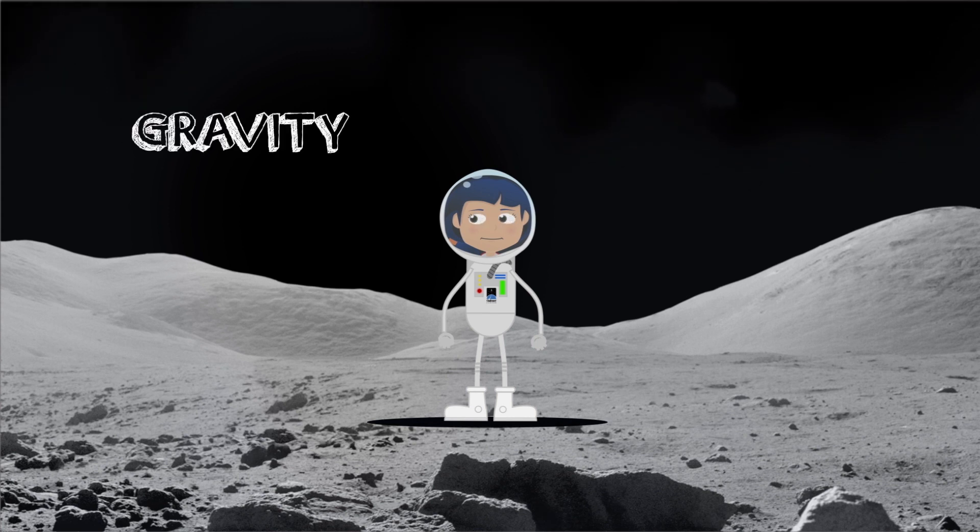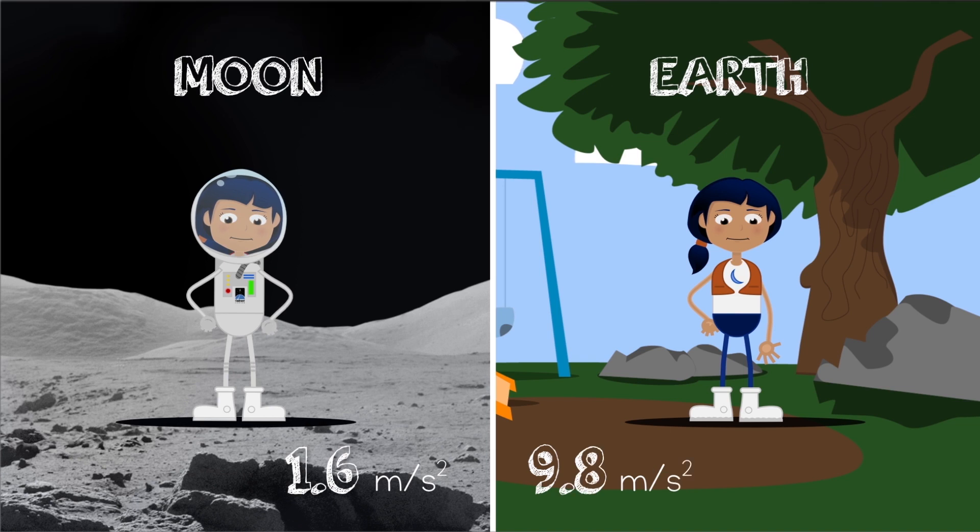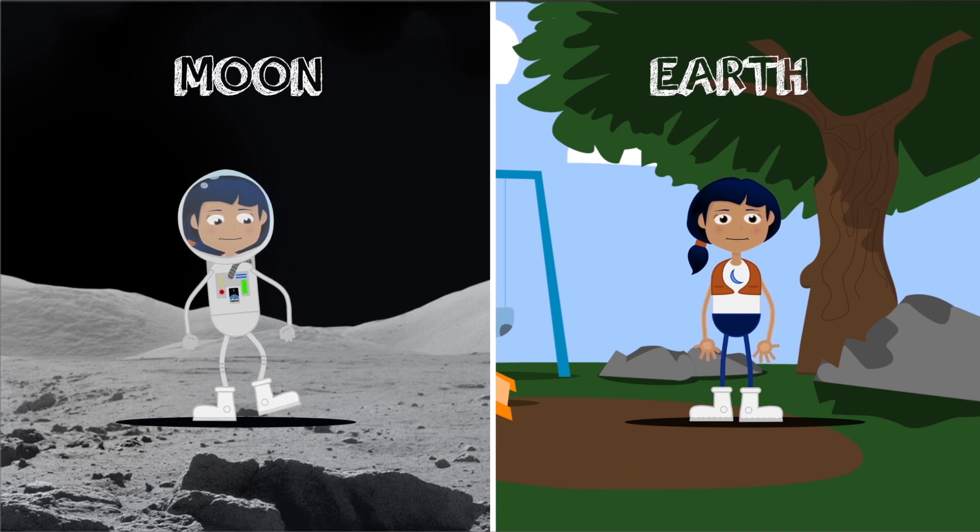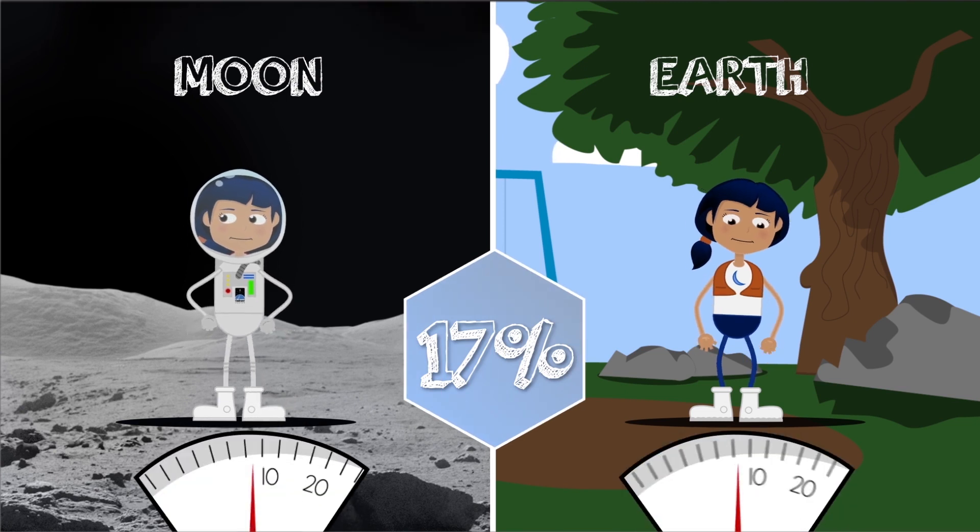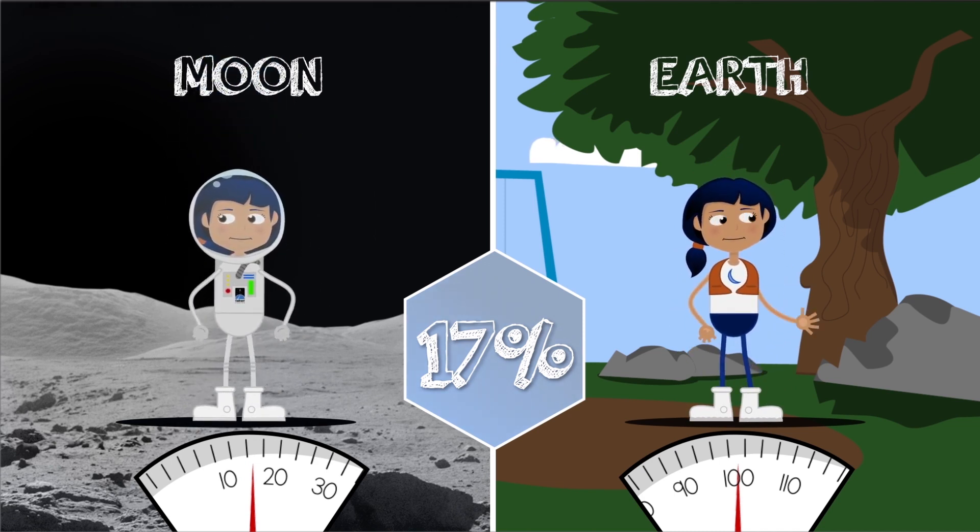The gravity on the moon is 1.6 meters per second squared, while the gravity on Earth is 9.8 meters per second squared. This means you'd weigh about 17 percent of what you'd weigh on Earth. Someone who weighs 100 pounds on Earth would only weigh 17 pounds on the moon. So it looks like people are almost weightless on the moon compared to Earth.